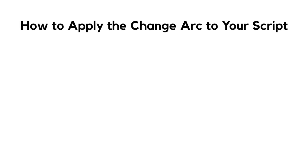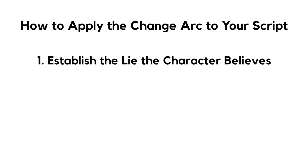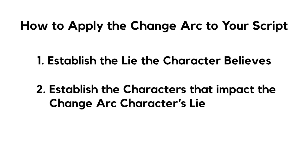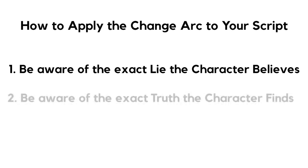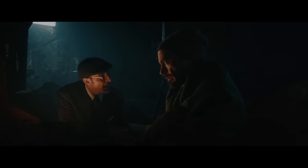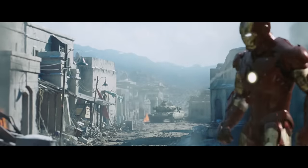When writing a positive change arc character, there are a few elements useful to keep in mind. First, establishing the lie the character believes is one of the most important elements — the audience will not be able to see how the character changes over time if they don't understand the lie. Another important element is the characters or events that put the change arc character's lie into question, reveal the truth, and help drive not only the internal conflict but the external plot as well. It can be helpful to know the exact lie and the exact truth when beginning a story, giving you a starting point for internal conflict so the plot can grow more naturally out of the character's want and need.